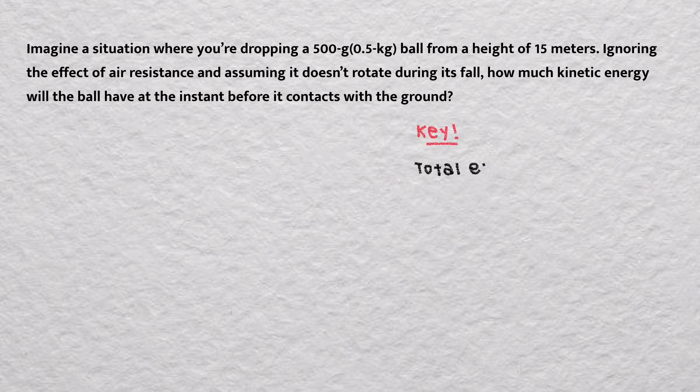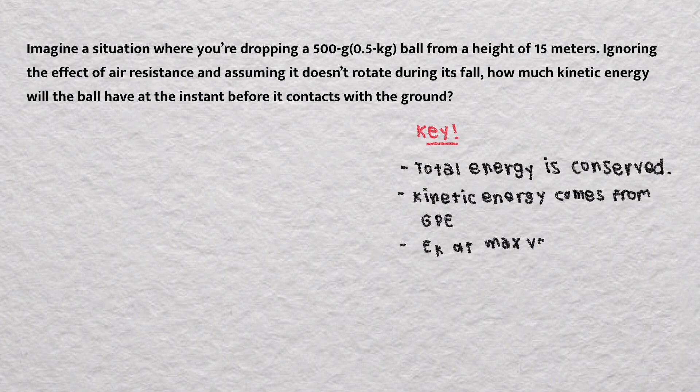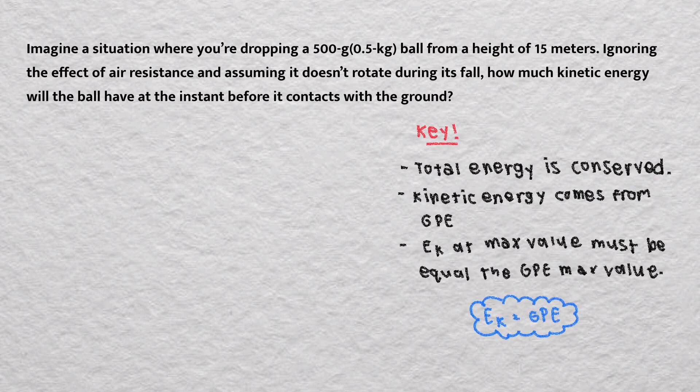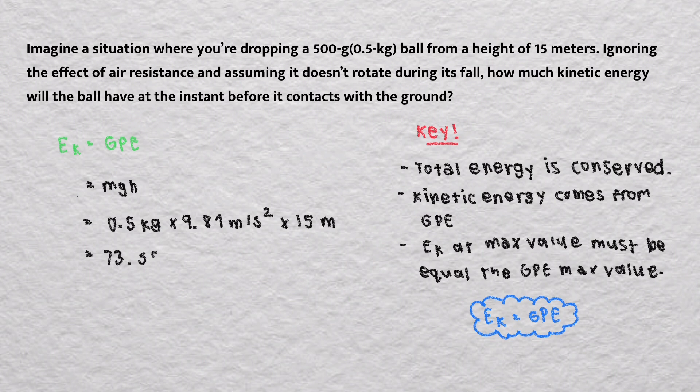So the key to this problem is the fact that total energy is conserved. So all of the kinetic energy comes from the GPE and so the kinetic energy EK at its maximum value must equal the GPE at its maximum value or GPE equals EK. So EK equals GPE or GPE equals MGH. So 0.5 x 9.81 x 15 equals 73.58 J.